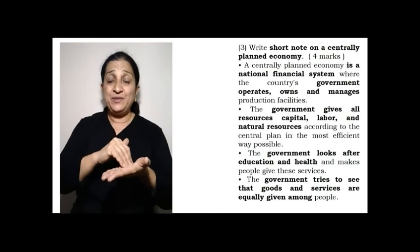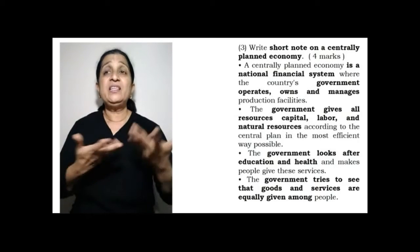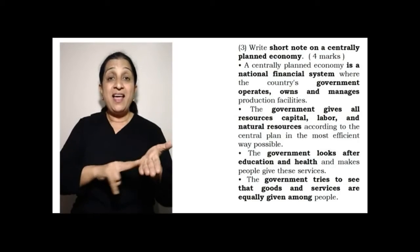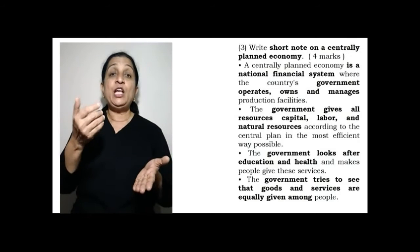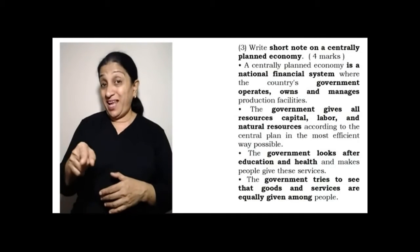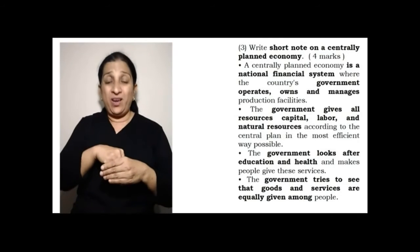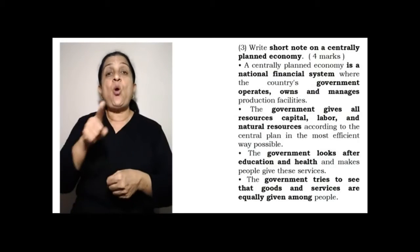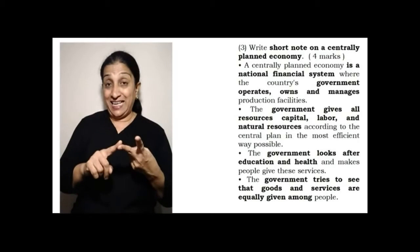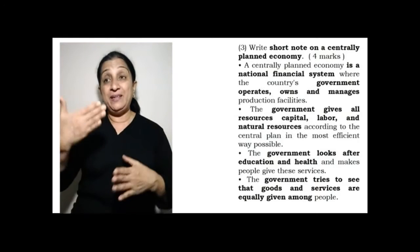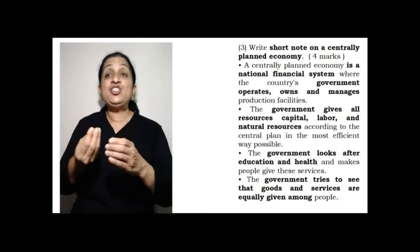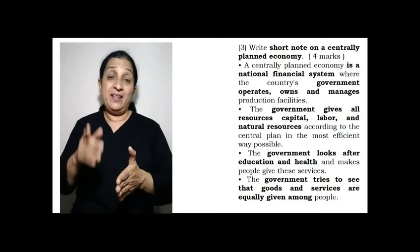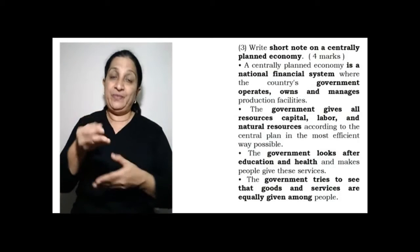Question 3: The important features of the central planned economy. First, in this economy, it is a national financial system where government owns all things and operates, manages production facility. Second, government gives resources like capital, labor and natural resources according to its own central plan in the most efficient way.